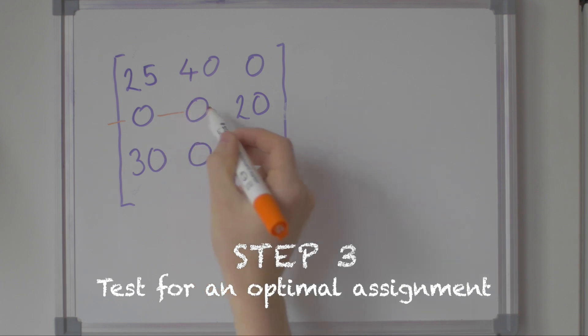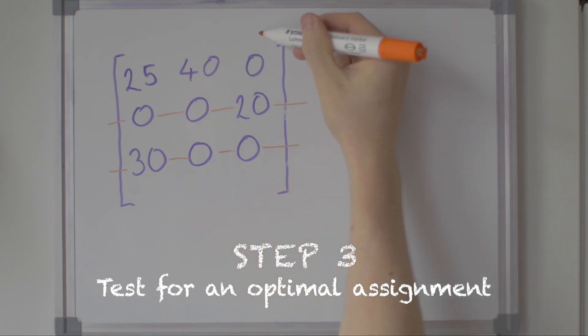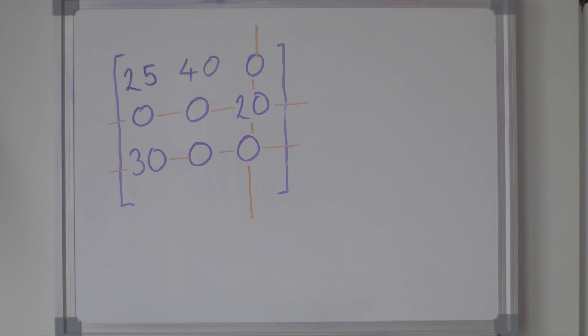Step three: test for an optimal assignment. To do this, we draw the minimum number of straight lines on the matrix to cover all the zeros. If the number of lines is equal to the number of rows and columns, an optimal assignment can be made and we can skip to step five. In our example, we have covered the zeros using three lines. This is equal to the number of rows and columns, so we can skip to step five.